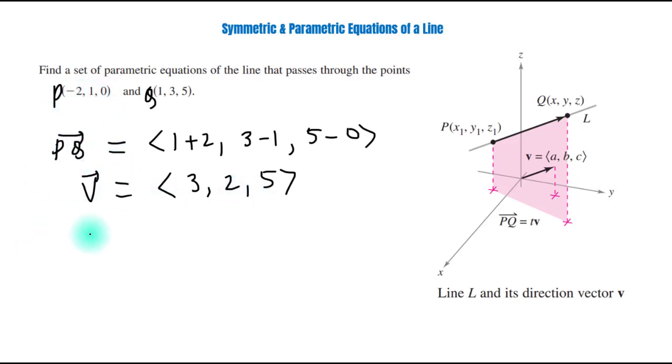So, in this case, parametric equation is x equals -2 plus 3t, y equals 1 plus 2t, and z equals 0 plus 5t. So, this is parametric equation of line.